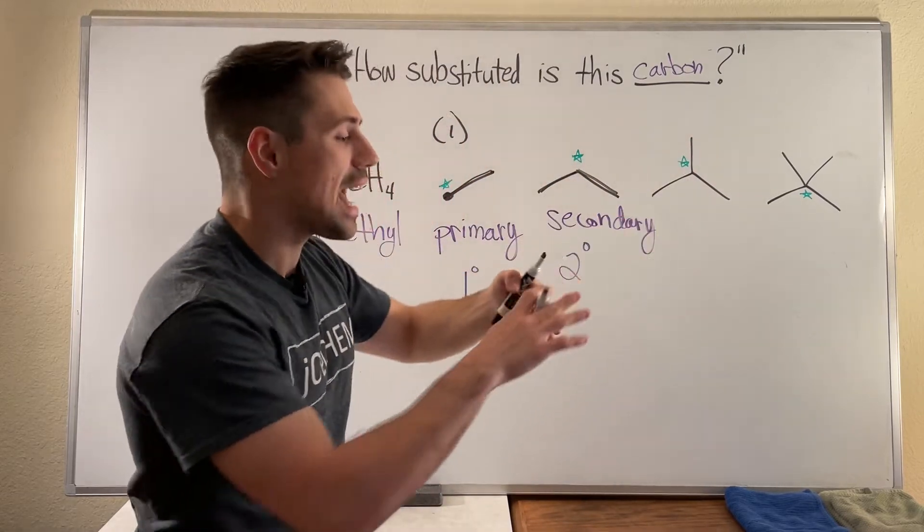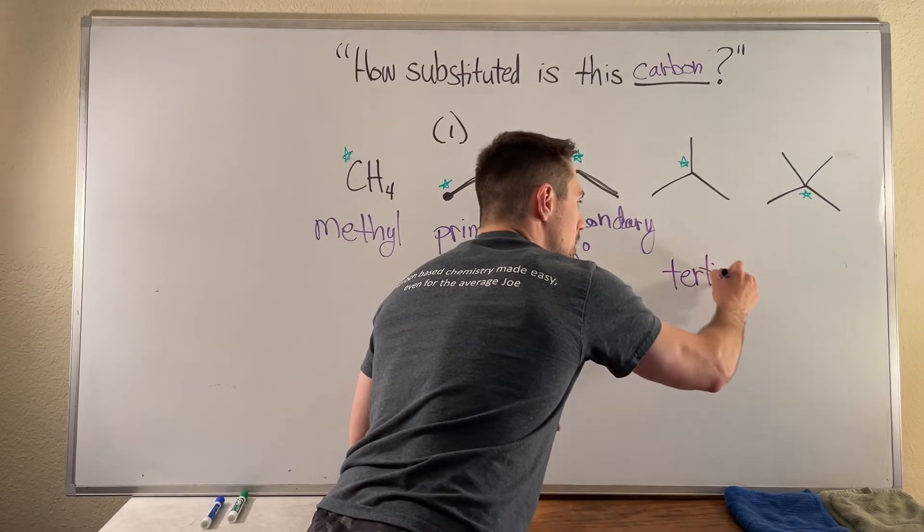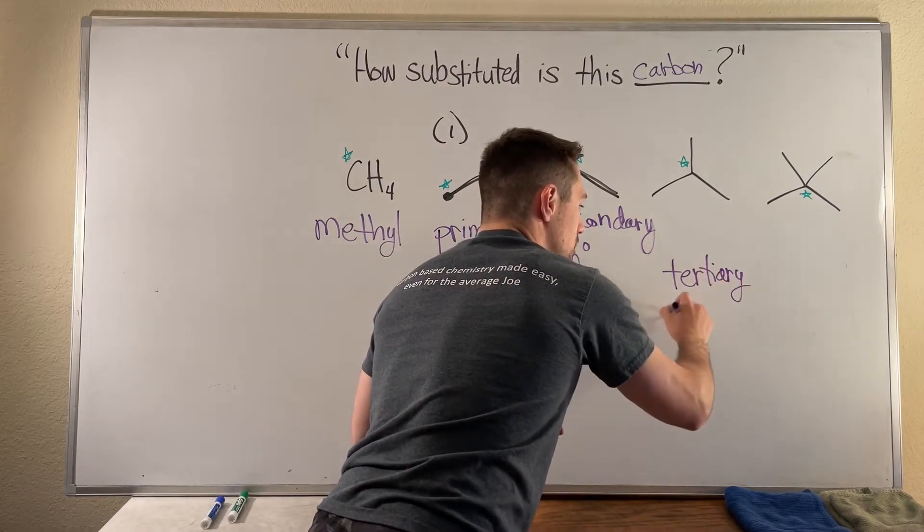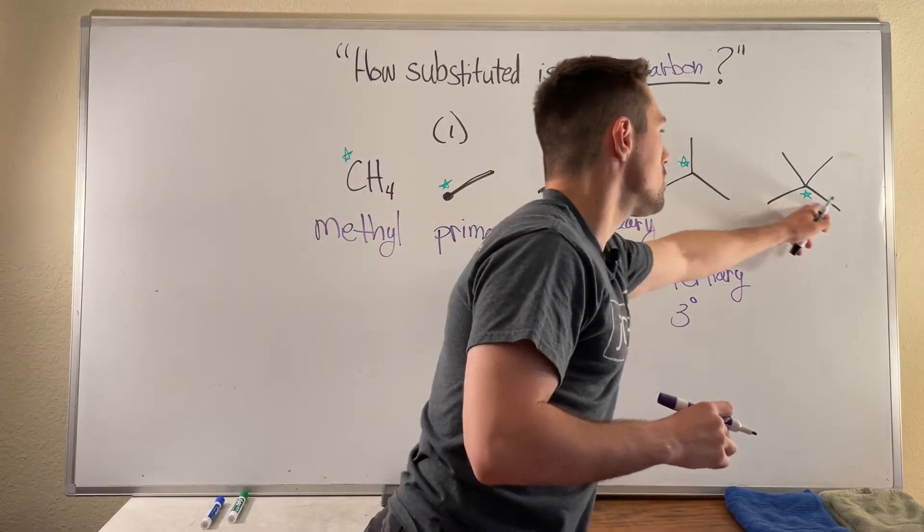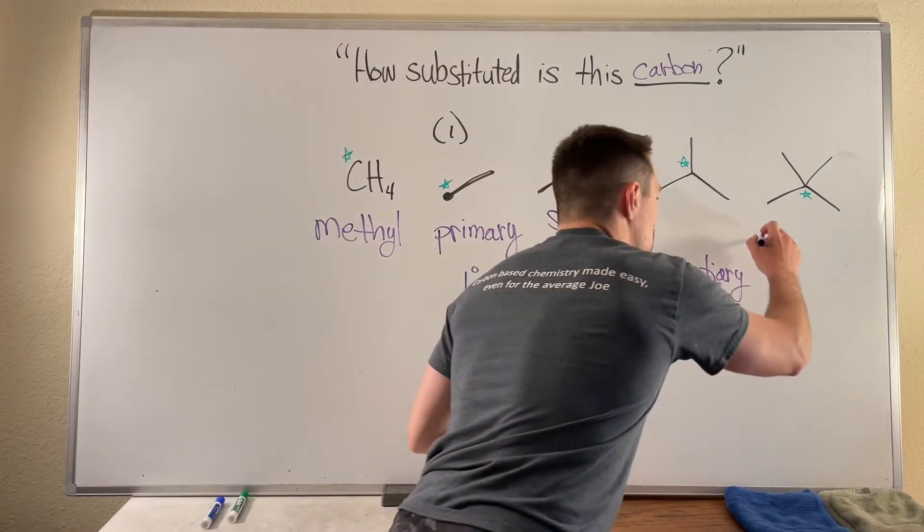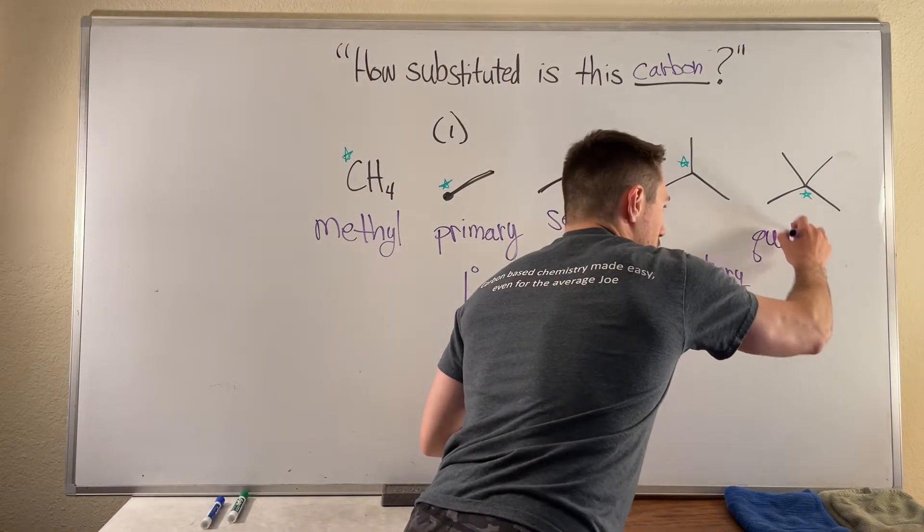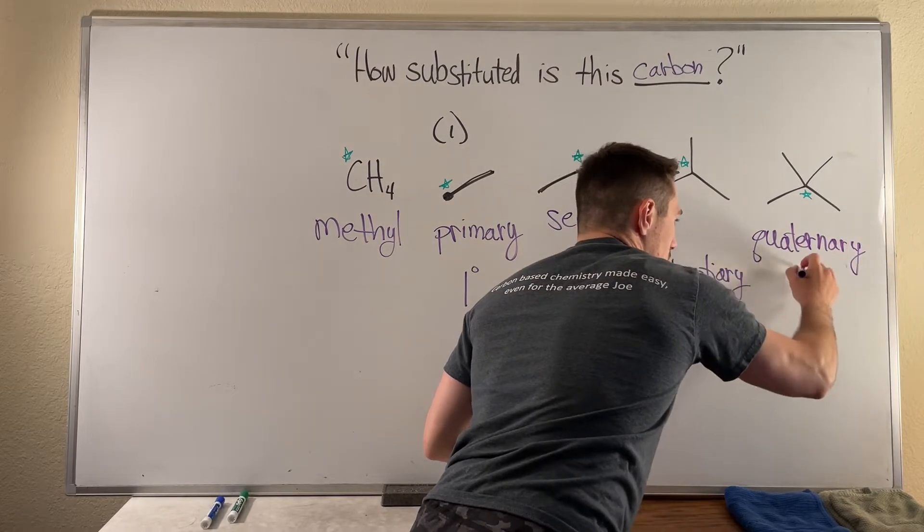Now over here we see this green starred carbon has one, two, three carbons that it's attached to. You can refer to a carbon like this as tertiary, also doing the three degree symbol. And then last but not least over here we have one, two, three, four carbons that that green starred carbon is attached to. So you can call this quaternary and do a little four degree symbol.